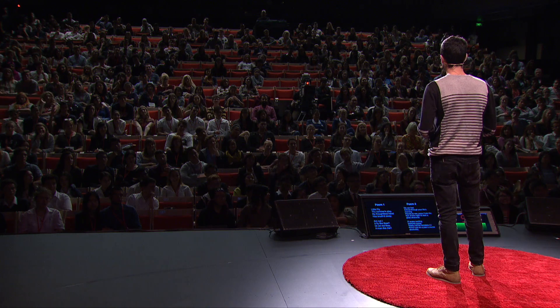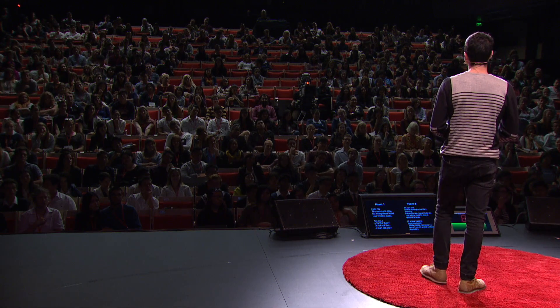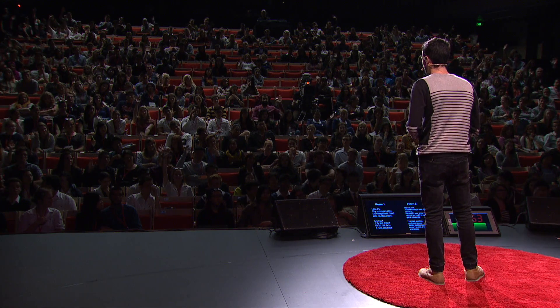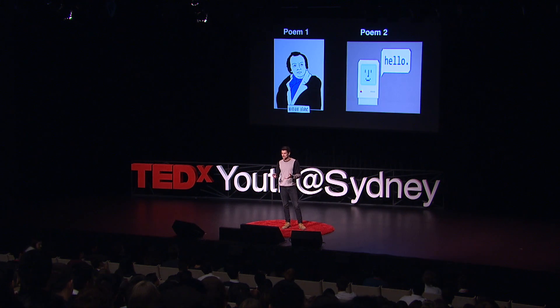Hands up if you think poem one was written by a human. Okay, most of you. Hands up if you think poem two was written by a human. Because the first one was written by the human poet William Blake. The second one was written by an algorithm that took all the language from my Facebook feed in one day, and then regenerated it algorithmically. But most of you got that right, and it's probably a little bit easy.